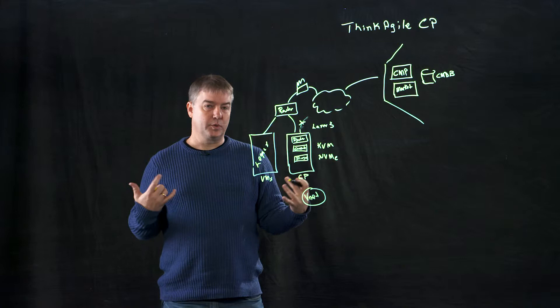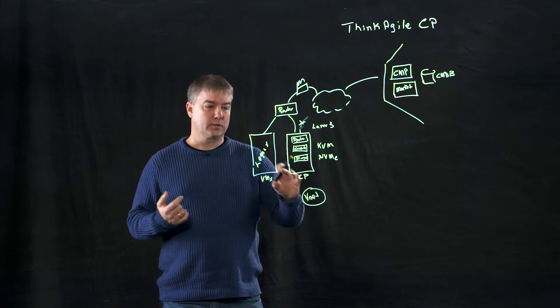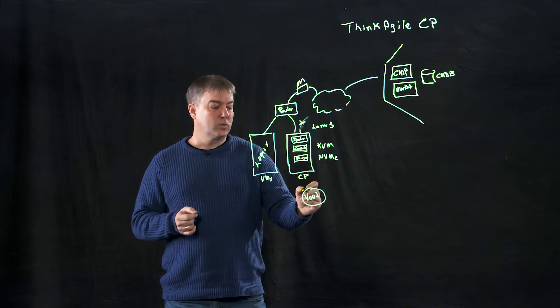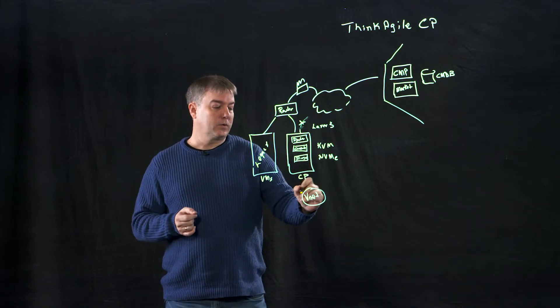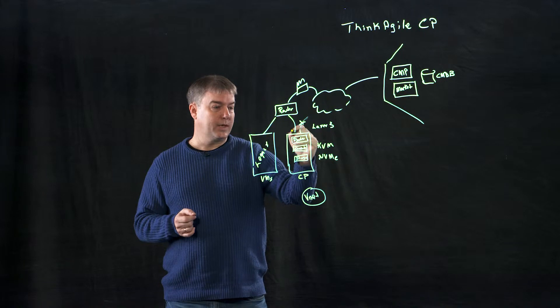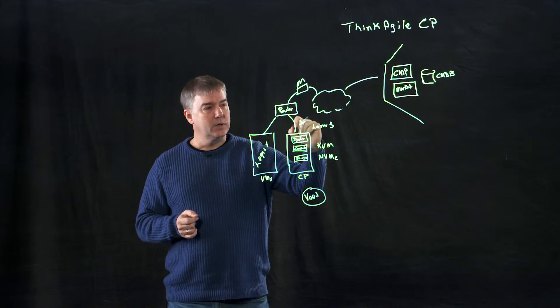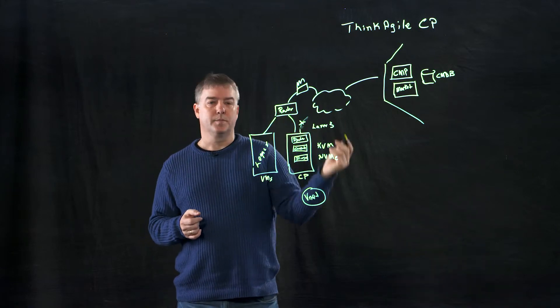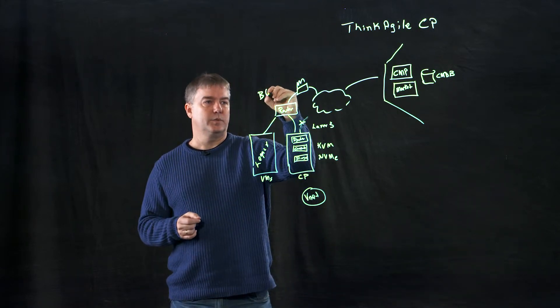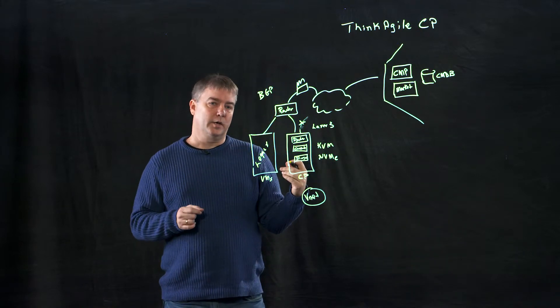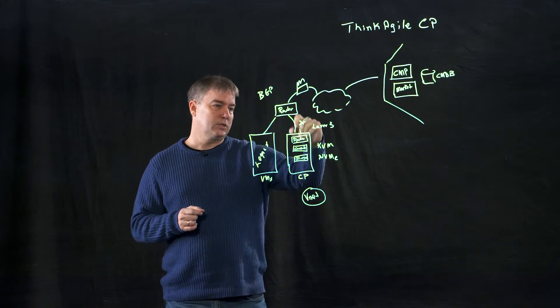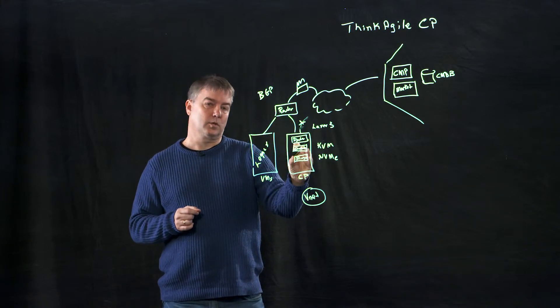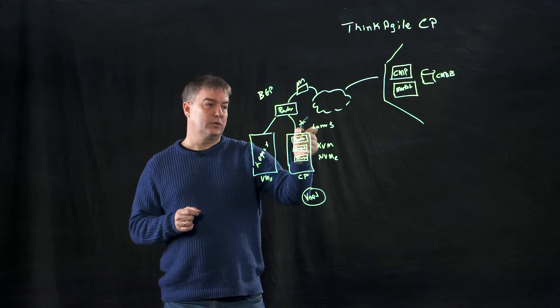One of the things that we do when we're building out this architecture for a customer that's leveraging this legacy environment and the new ThinkAgile CP is we define what the different routes are. What that means is our router inside a CP and your router here are going to have to share routes, share a routing table. The way you typically do that, you use something called BGP or any kind of routing sharing protocol so that these two can actually share the routes. That allows workloads running here to access the workload running here and vice versa. So the two can talk to each other.